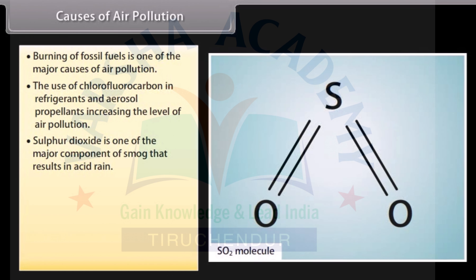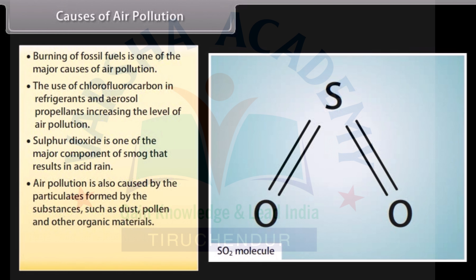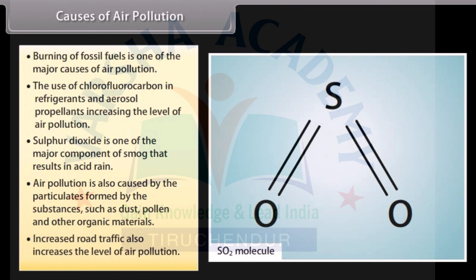Sulfur dioxide is one of the major components of smog that results in acid rain. Air pollution is also caused by particulates formed by substances such as dust, pollen and other organic materials. Increased road traffic also increases the level of air pollution.